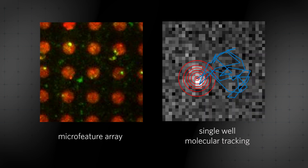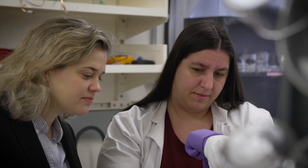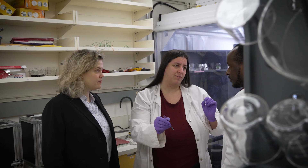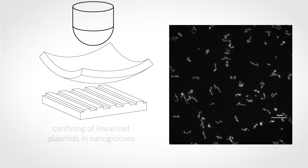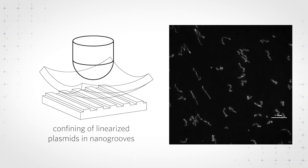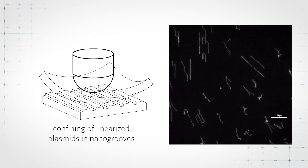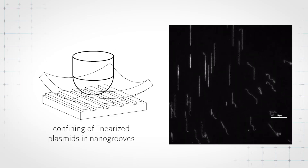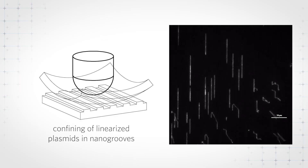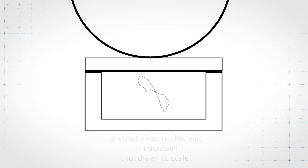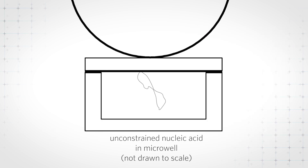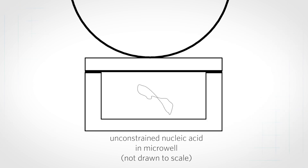I study DNA structure and how, when DNA gets twisted up, its structure changes. CLIC allows us to look at these molecules without tethering them in any way. Since I want to know how twisting up the molecule changes its structure, tethering it could change how it gets twisted, which can really alter the results.